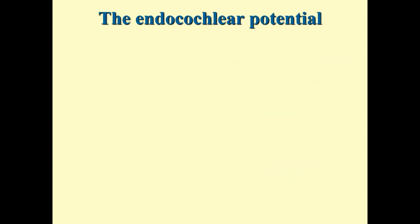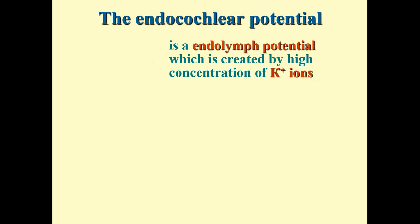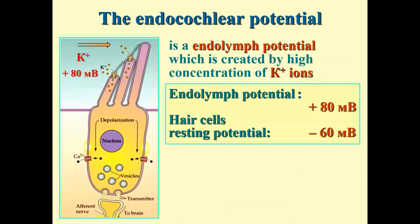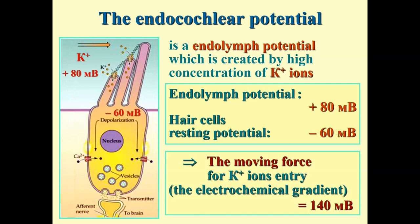The endocochlear potential is the charge of the endolymph, approximately +80 mV, created by its high potassium concentration. Hair cells have a resting membrane potential of approximately −60 mV inside. Therefore, the total driving force for potassium entry is 140 mV — a very great force. This is one of the key reasons for the high sensitivity to sounds: even minimal opening of channels from a tiny ciliary deflection produces a great entry of potassium.